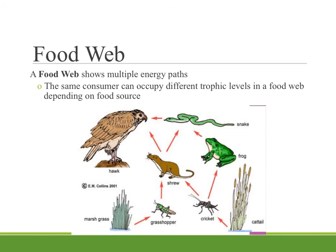A food web is putting together many food chains to show us multiple energy paths through an ecosystem. It's important to note that the same consumer can occupy different trophic levels in a food web depending on the food source that's being considered. To label this food web, we've got two producers down here on the bottom — marsh grass and cattail — and then those will be eaten by your primary consumers. We'll put a little one here by our crickets and the grasshoppers, as they are eating the producer directly.